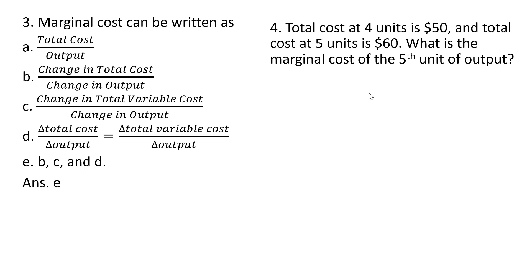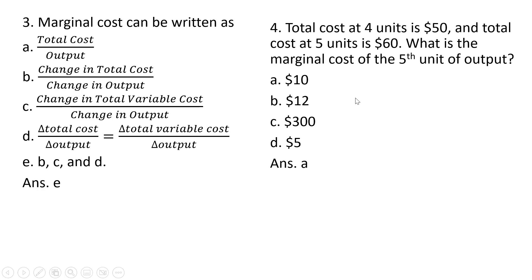Question 4. Total cost at four units is $50 and total cost at five units of output is $60. What is the marginal cost of the fifth unit of output? As we go from four to five units of output, total cost increases by $10 — that would be the marginal cost. Answer choice A is correct.